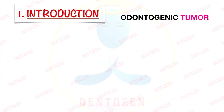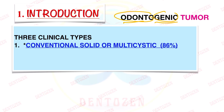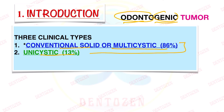Ameloblastomas are odontogenic tumors. 'Odonto' means tooth and 'genic' means forming — tooth-forming tissue. This is why they are called odontogenic tumors. Now there are three types: the first type is known as conventional solid or multicystic type, the second is known as unicystic type. We have already discussed these two types in previous videos, the links for which you can find in the description box below.